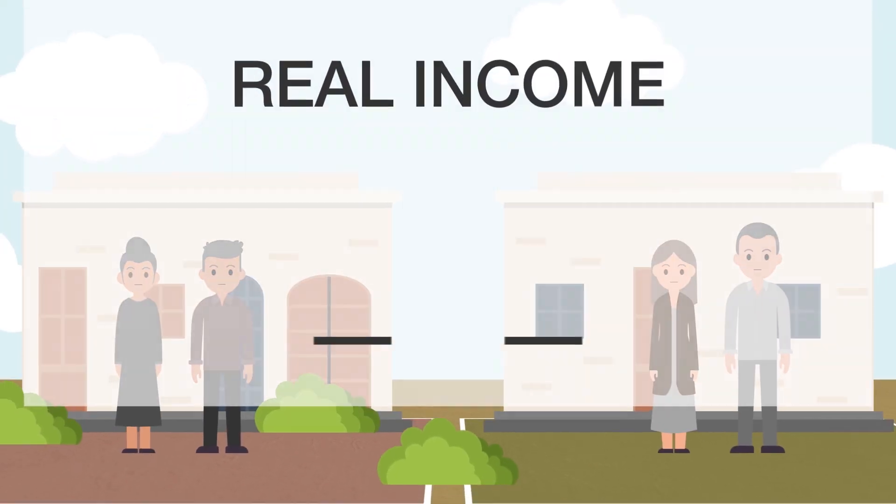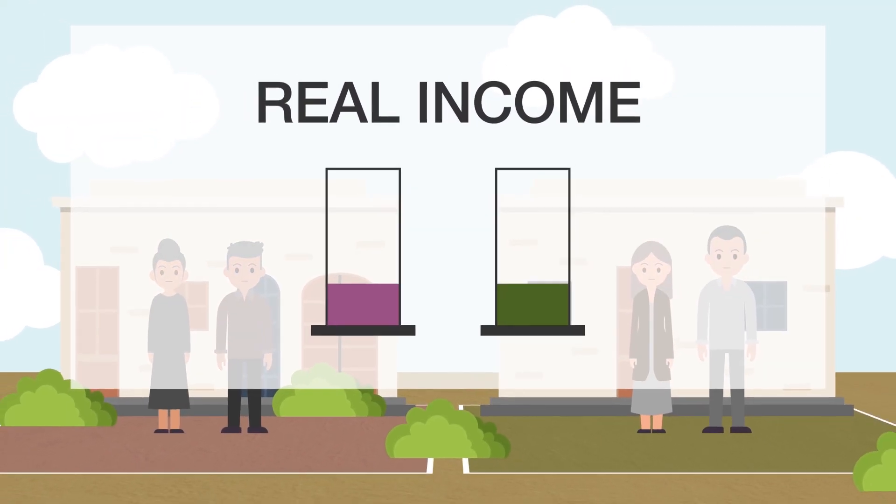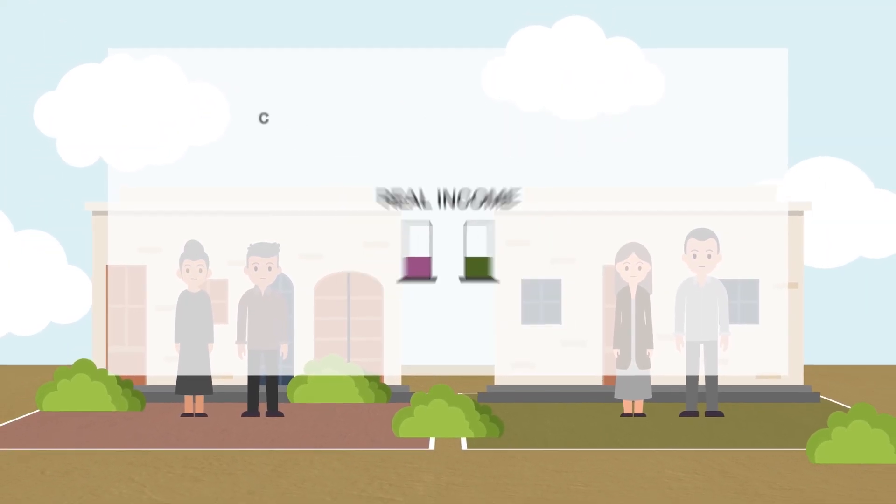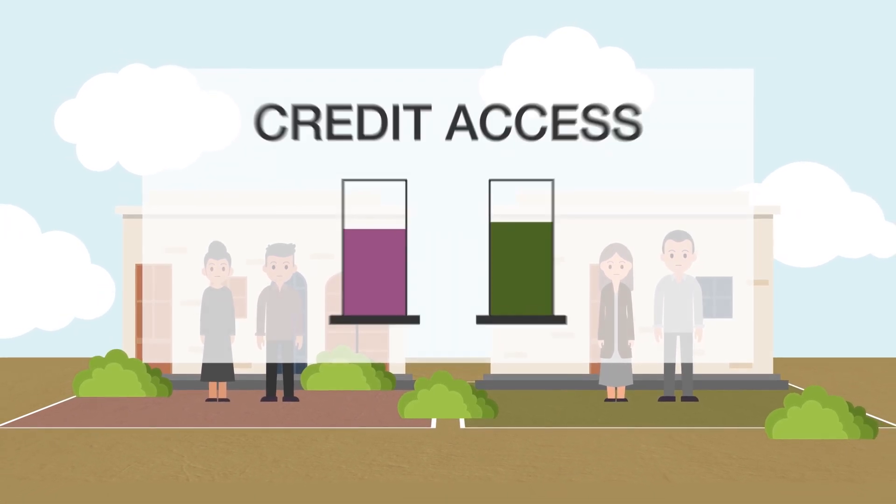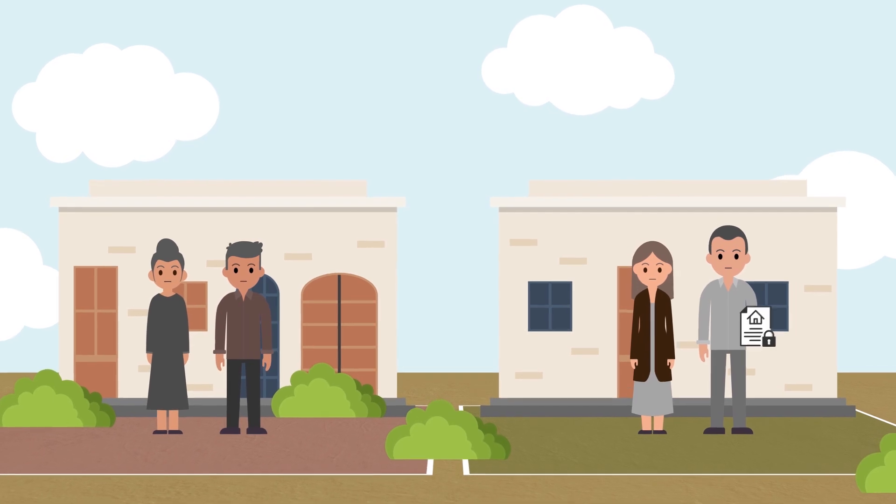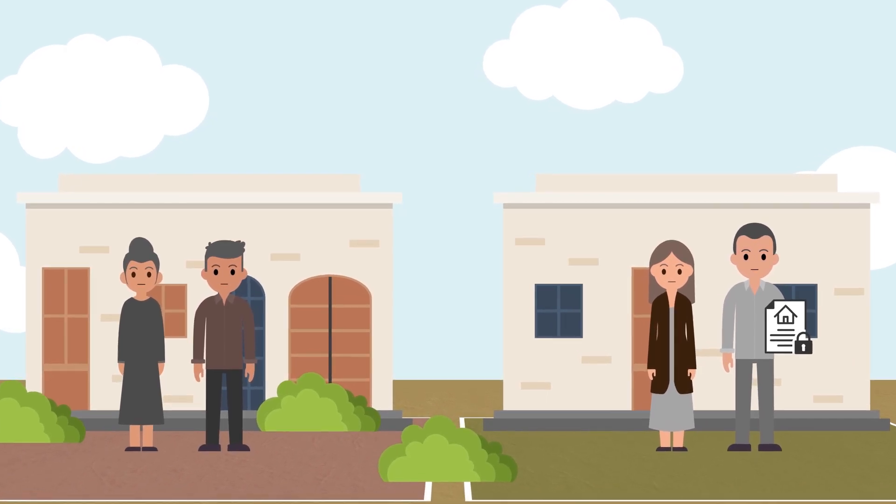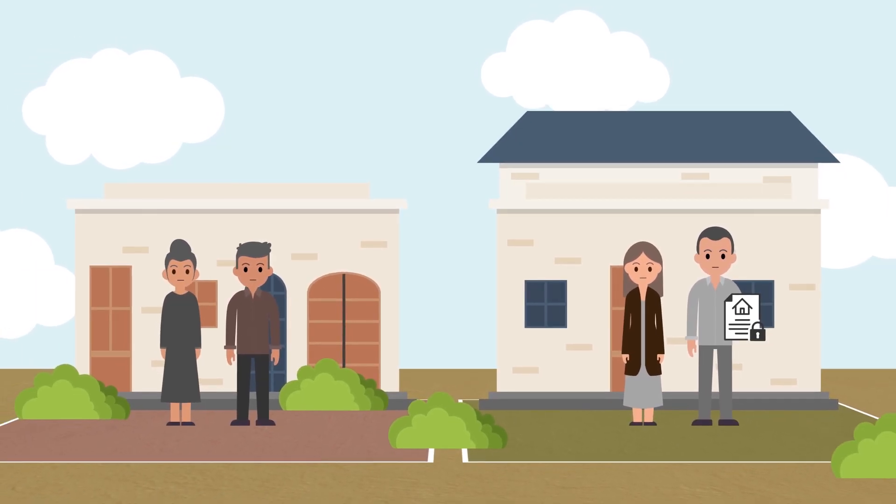The study found that there were no differences between the two groups' real income levels, and there was only a very small difference in access to formal credit. However, for those families with deeds, the quality of their houses was better by approximately 40%.